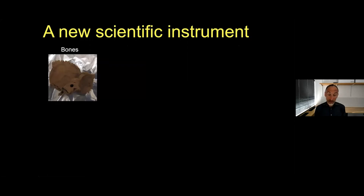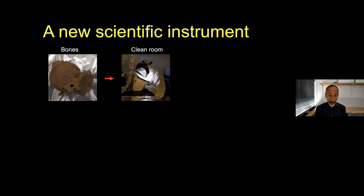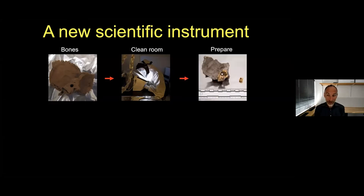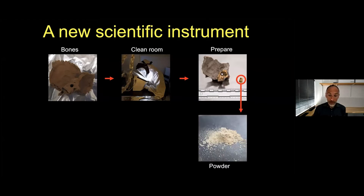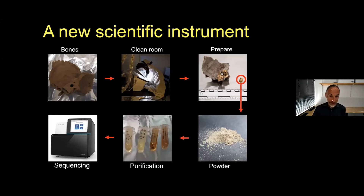I'm going to talk about this new scientific instrument that's come online in the last 12 years, with the first whole genome data reported in 2010. It starts with a human remain — like a bone or a tooth. In a clean room, the goal is to get beneath the surface of the remain to parts not contaminated by archaeologists or lab handlers, and we take out a particularly DNA-rich part of the bone or tooth. We sequence it using sequencers that have dropped the cost of sequencing by a factor of about one million over two decades, making these studies possible.